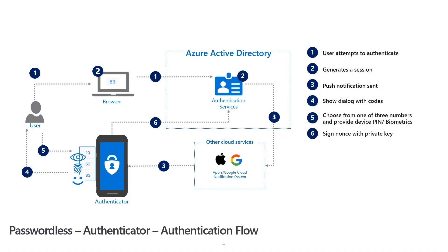A nonce is then signed using the private key and returned to authentication services, which then verifies the signed nonce and checks if the user correctly matched the number on the authenticator. Finally, once authentication services validates the signed nonce and the number selected by the user, it generates a token and presents it to the browser. At this point, the user is authenticated to access the resource and this completes the flow.